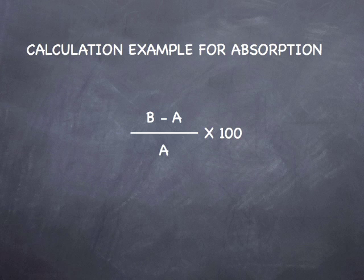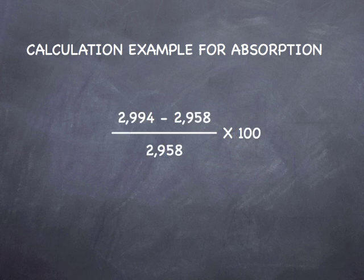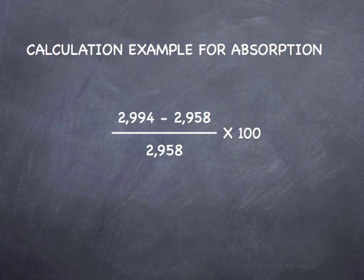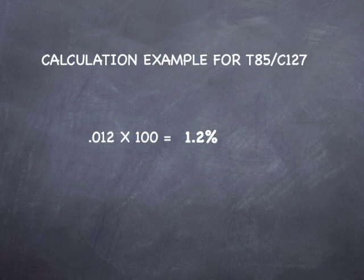We can now calculate our absorption. The calculation for absorption is B minus A divided by A, times 100. That is: 2,994 minus 2,958, divided by 2,958, times 100. This gives us 36 divided by 2,958, which equals 0.012, and 0.012 times 100 gives us an absorption of 1.2%.